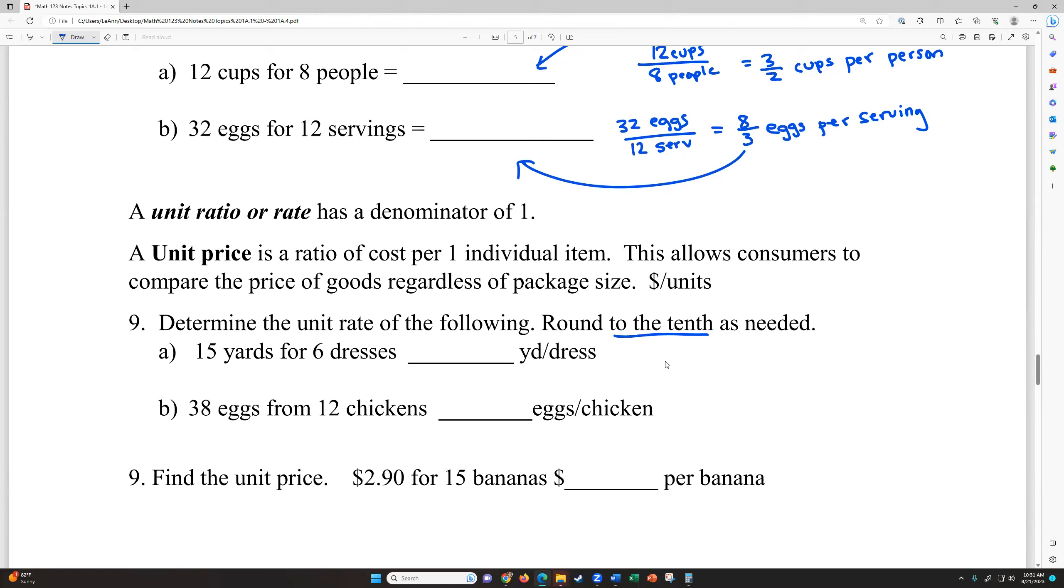So we want to determine the unit rate of the following, round to the nearest tenth as needed. Always pay attention to your directions for rounding. So 15 divided by six, because we're going to actually use the division button. When we're going to a unit rate, you want to divide your fraction to a decimal form. So this is equal to 2.5. So this is 2.5 yards per dress. So they need two and a half yards of material for every single dress.